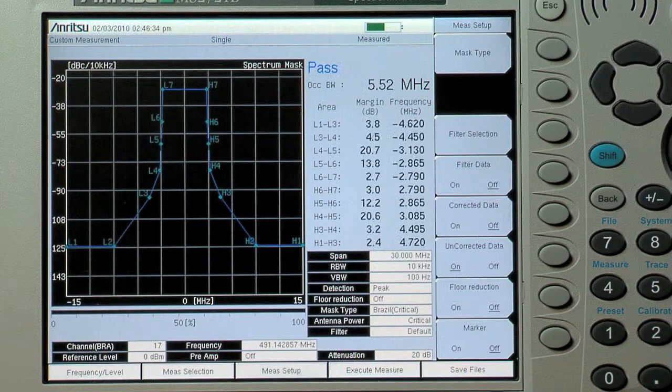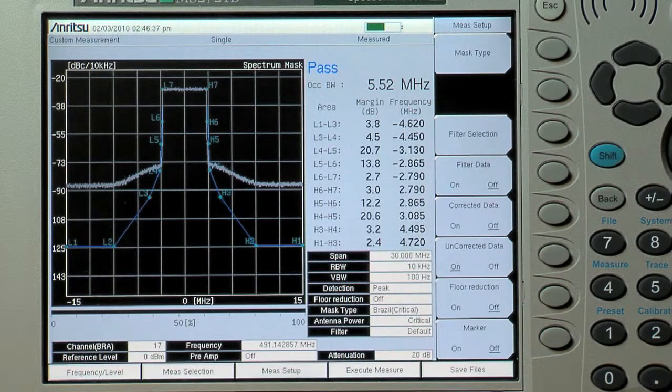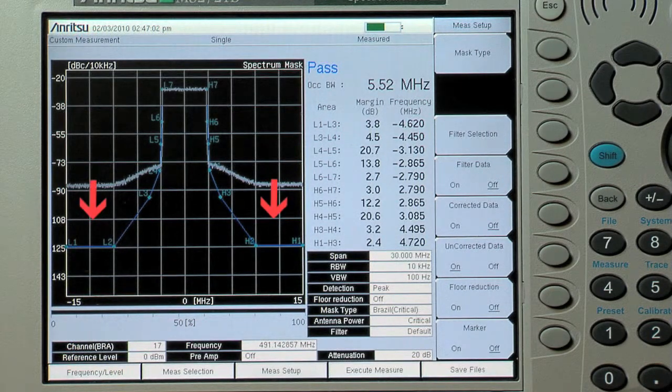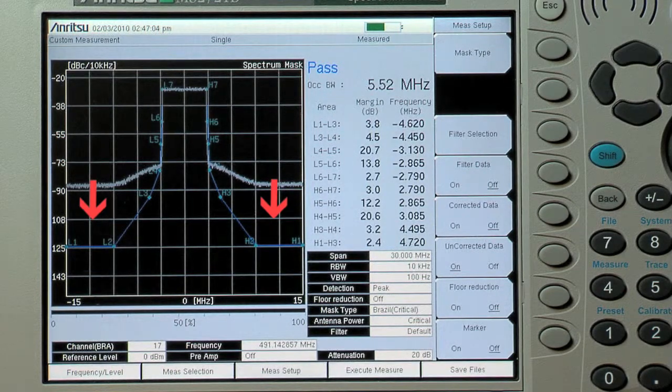The high-rejection filtering used at the transmitter output means that the spectrum mask measurement demands in the ISDB-T specification are beyond the dynamic range capabilities of most spectrum analyzers.